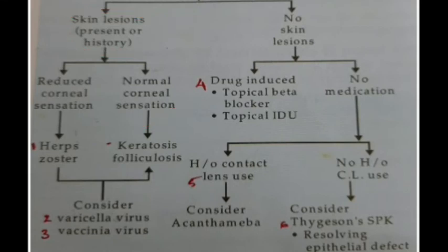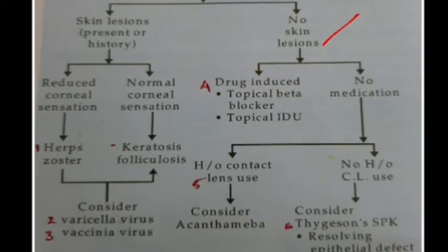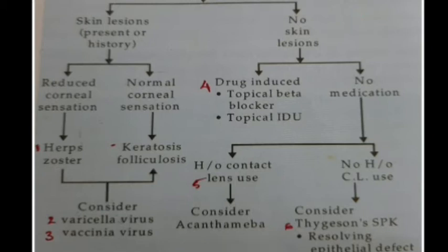Suppose there is no skin lesion and the patient has a dendritic ulcer — if there is a history of usage of drugs like topical beta blocker or idoxuridine, then it could be a drug-induced lesion. If there is no history of medication usage, ask for a history of contact lens usage. If there is a history of contact lens usage, consider Acanthamoeba as the differential diagnosis. If there is no history of contact lens usage, it could be an Igersen's SP case.